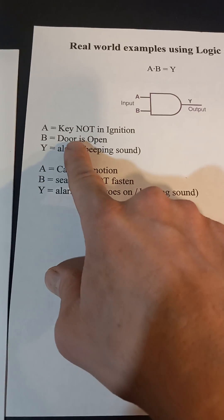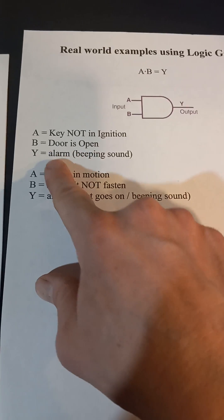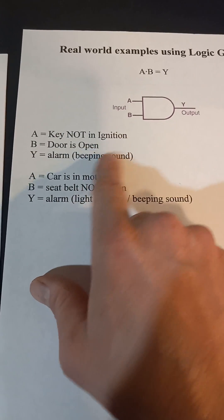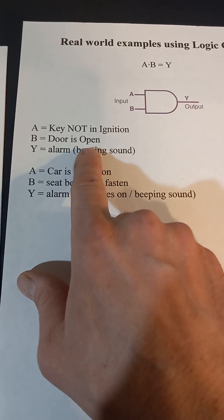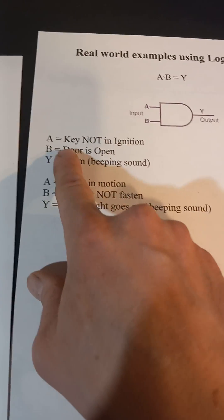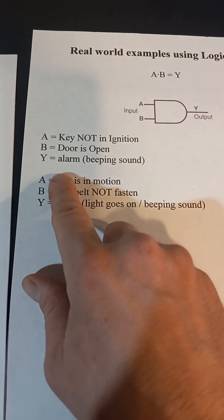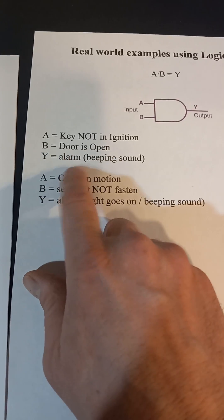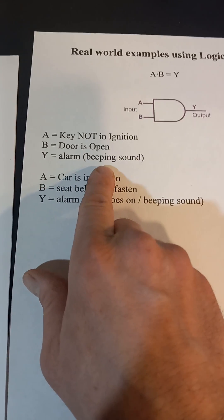So a simple one would be the key is not in the ignition, the door is open, and you get an alarm. So your two inputs would be that, and your output would be the alarm, whether it's a light or a beeping noise.